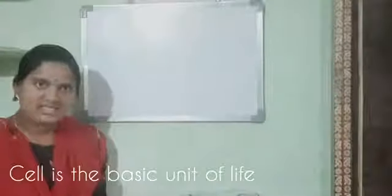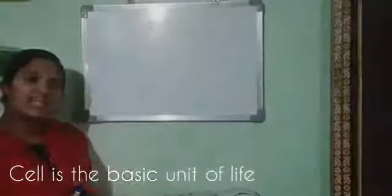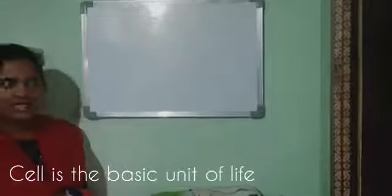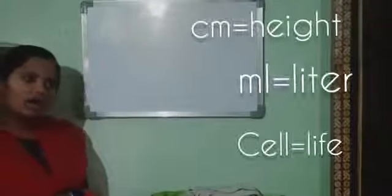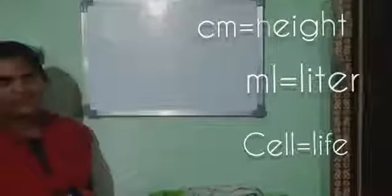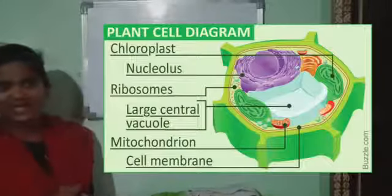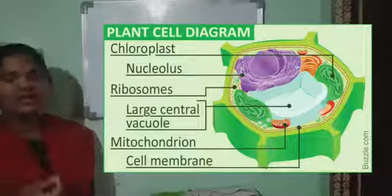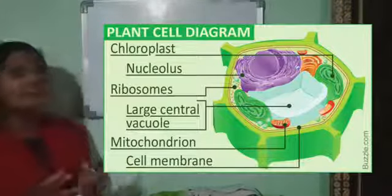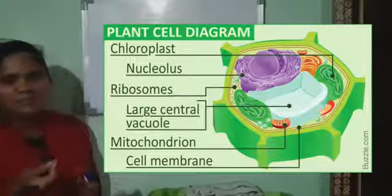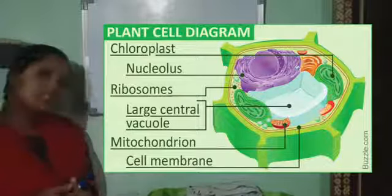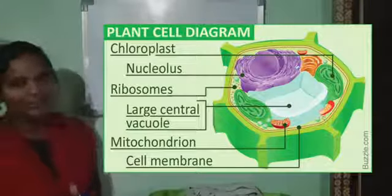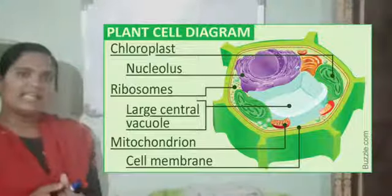Now we will discuss about the cell. Cell is the basic and fundamental unit of life. For example, the minimum measure for height is centimeter, and for liters it is ml. Likewise, for life, the cell is considered as the minimum basic unit, and it is present in both prokaryotes and eukaryotes.